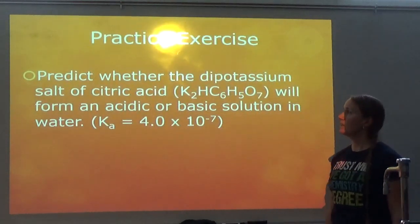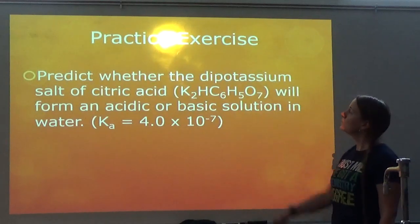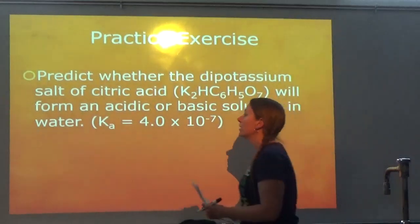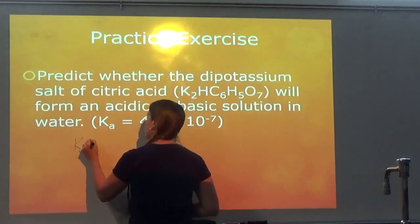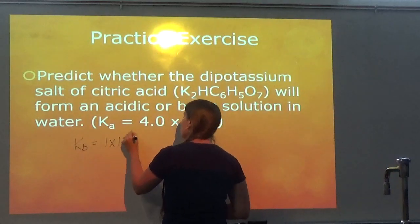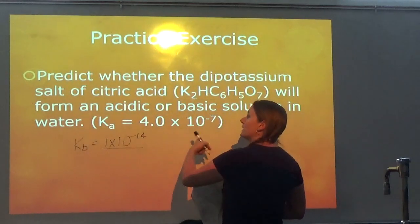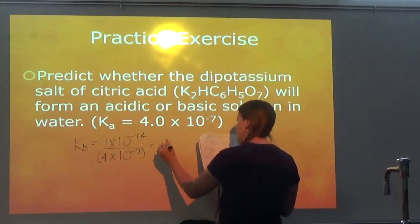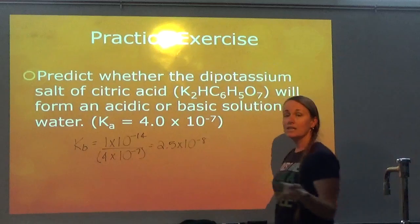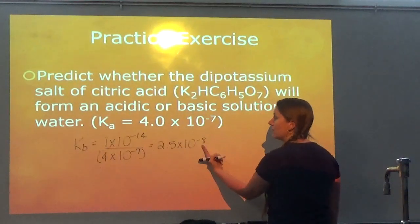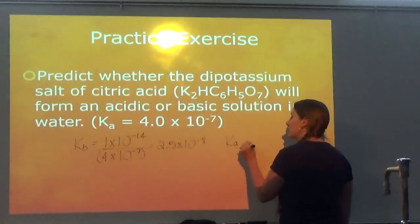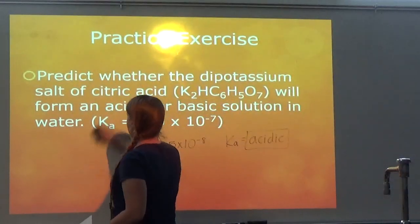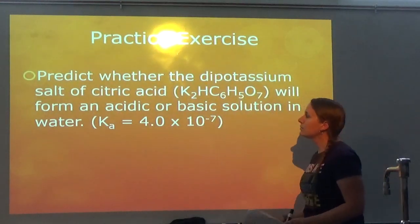Now you try the next one. It says: predict whether the di-potassium salt of citric acid will form an acidic or basic solution in water, and it gave the Ka value. I calculate Kb: (1×10⁻¹⁴) / (4×10⁻⁷) = 2.5×10⁻⁸. Ka is 10⁻⁷ and Kb is 10⁻⁸. Since Ka is bigger, the solution is acidic. Just plug and chug with that basic formula.